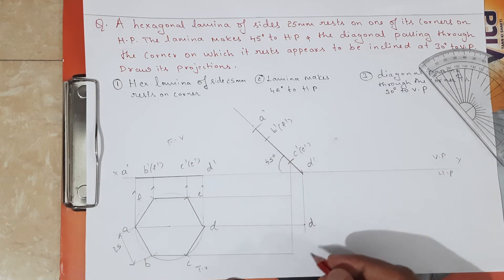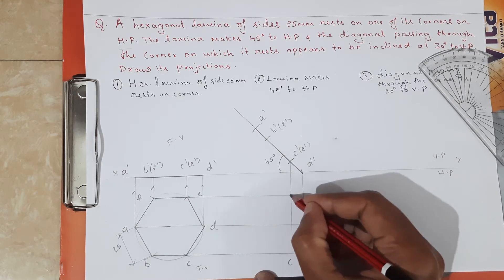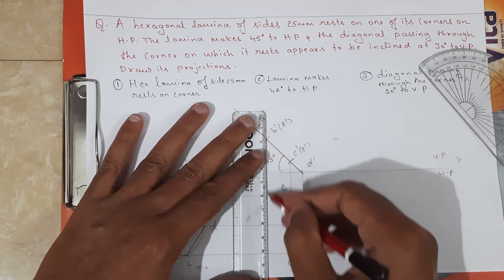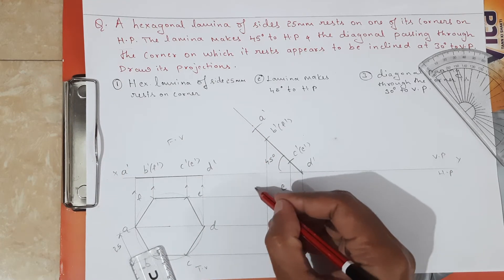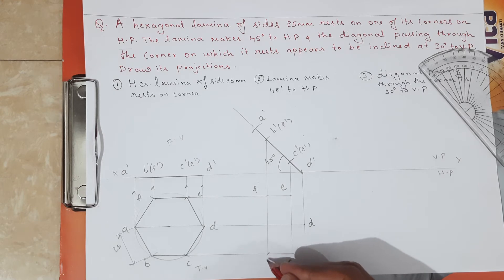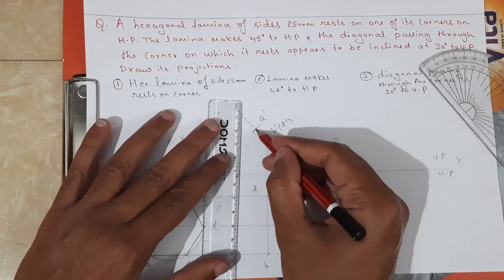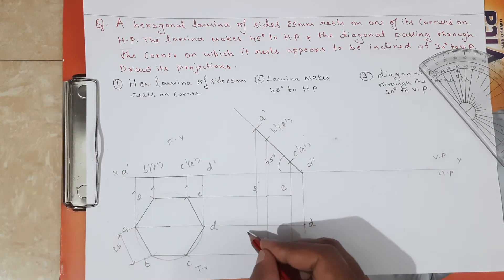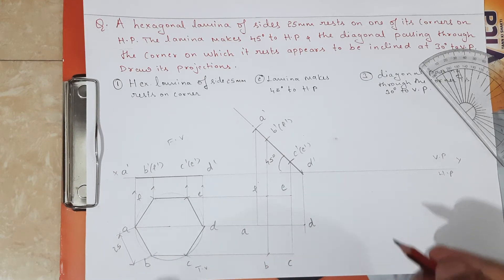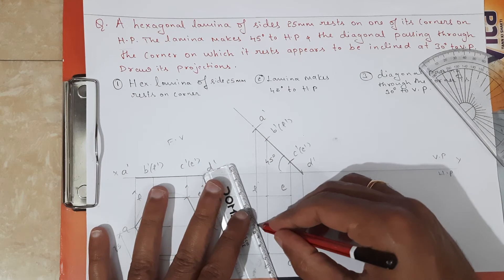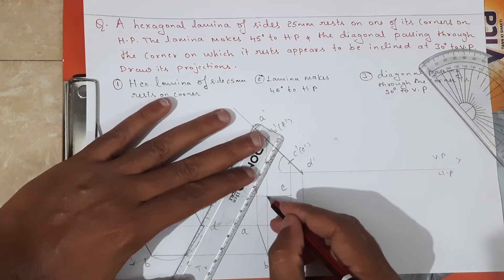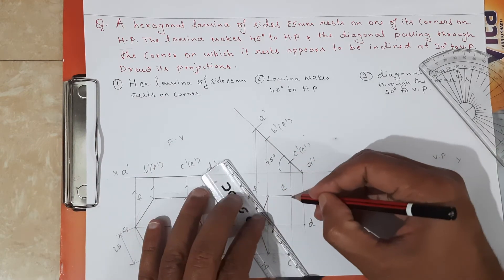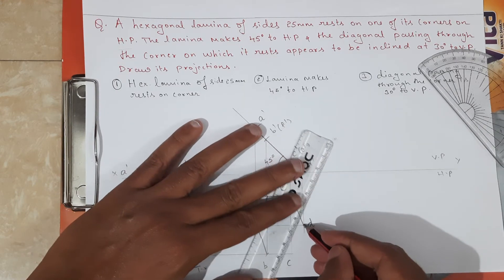Locate all the corners: C, E, B-dash, F-dash, F, B, and A-dash. Draw the horizontal and vertical projections accordingly. This gives corner A. After this, join with dark lines — the top view must be dark, so draw the hexagon like this.